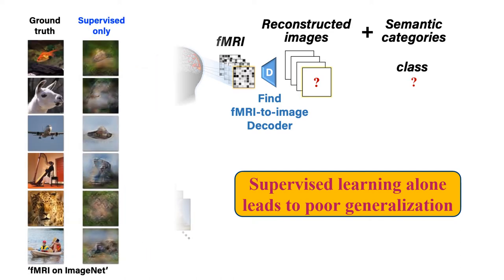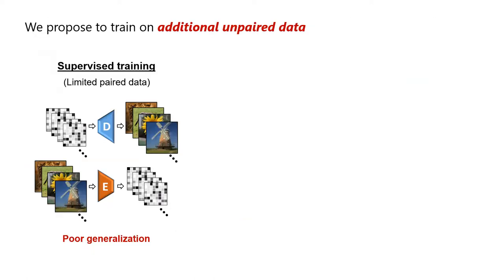Here is an example of what the reconstructions look like when following a supervised-only approach — the reconstructions are quite blurry. We propose to put back-to-back an encoder model which maps images to their fMRI, and a decoder model which captures the inverse mapping.